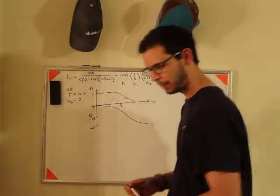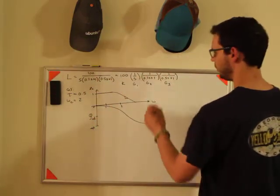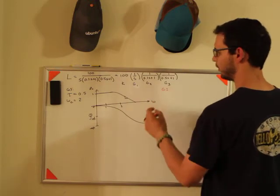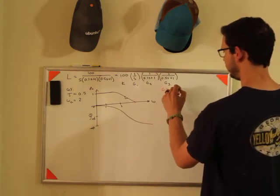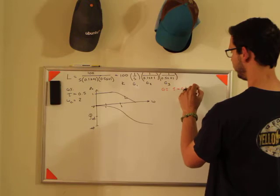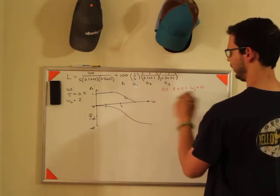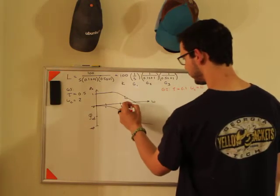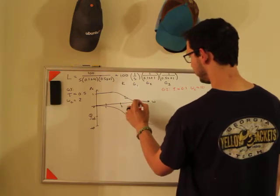My phase is going to be 0, at 2 it's going to be minus 45 and that's going to come down here like that and I have an asymptote at minus 90. I'm going to do that one in black. In red I'm going to do G2, so I'm going to do the same thing. Tau is 0.1 so that means my cutoff frequency is 10.